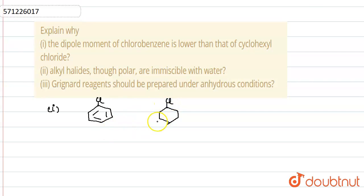Now, we have to compare why the dipole moment of chlorobenzene is lower than that of cyclohexyl chloride. It involves two factors. In the first case, this carbon is sp2 hybridized. And this carbon in this case is sp3 hybridized. Sp2 hybridized carbon has more S-character due to which it is more electronegative.